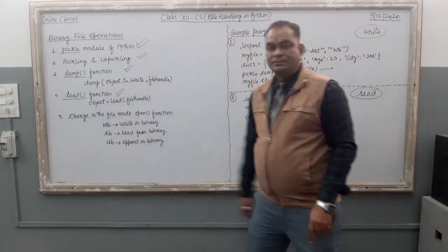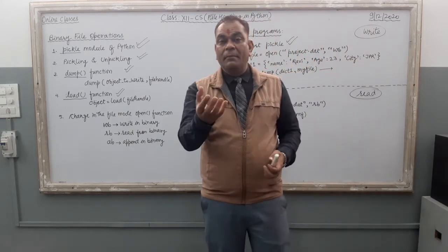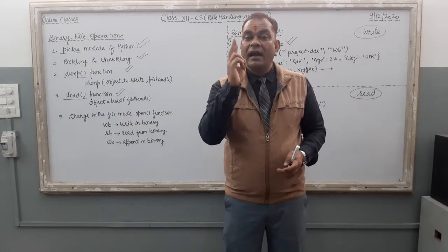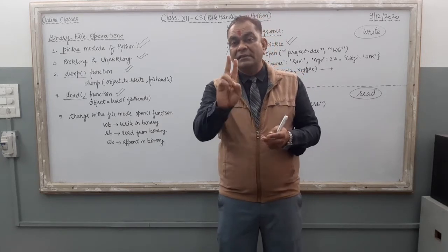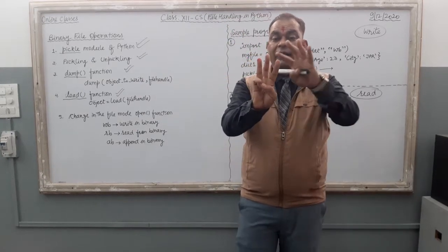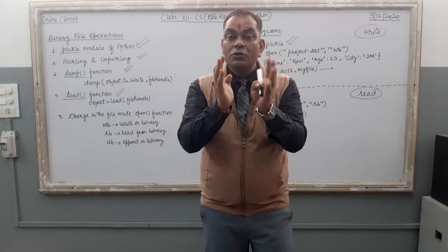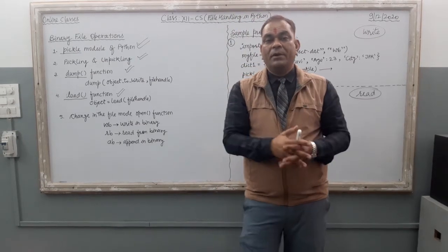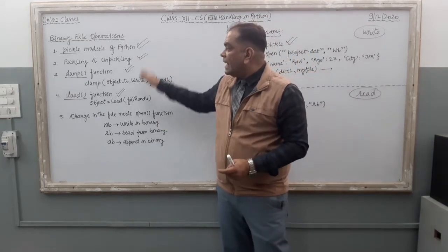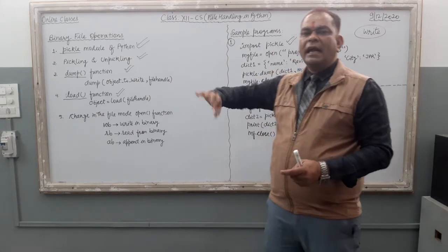For a text file, if you want to write something there are commands: write, writeline, writelines. If you want to read something there are three commands: read, readline, readlines. But for binary file operation, only two functions are there — just use dump and load for reading and writing.